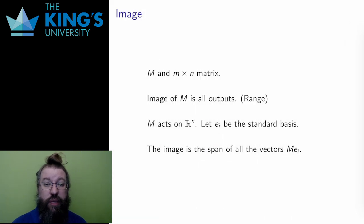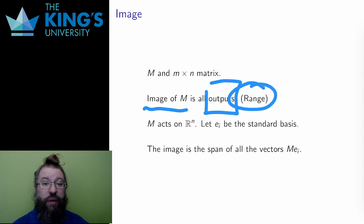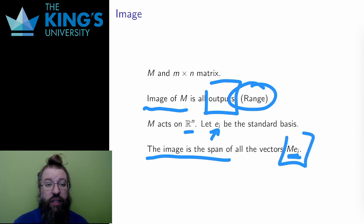In the previous video, I defined image. The image of a subspace is where the subspace goes under the transformation. The image of a transformation, of the matrix itself, is the range of the transformation, all possible outputs. How do I calculate this? Well, R^n is the span of the standard basis. And I know how matrices act on spans. The output is the span of the new vectors I get by using the matrix on the original span. So, the image of everything should be the span of M acting on e_i, the vector acting on the standard basis of R^n.